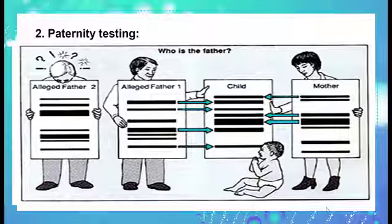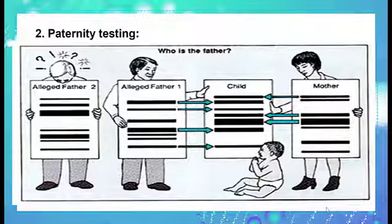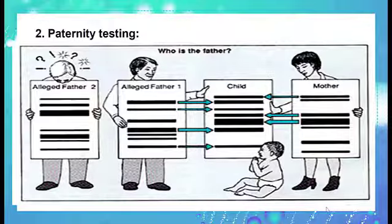Another domain is the paternity test. Since DNA fragments are inherited from both parents, DNA fingerprints of children should be similar to their parents' fingerprints. Some bands will match one parent and the other bands can match the other parent. That's why it is easy to determine the parents of a child by comparing their DNA fingerprint.